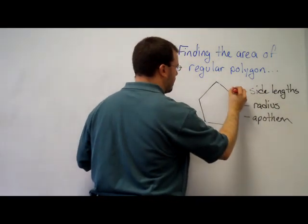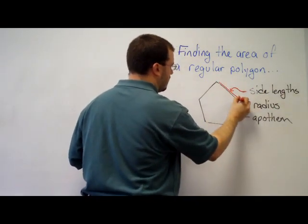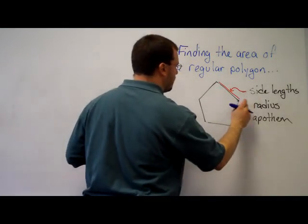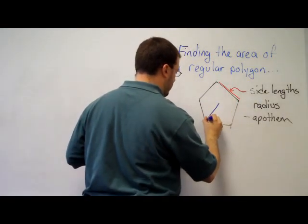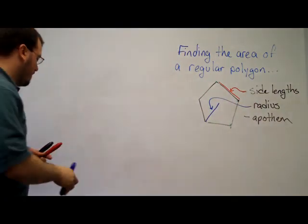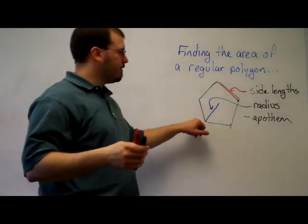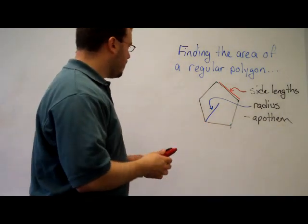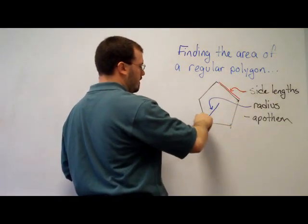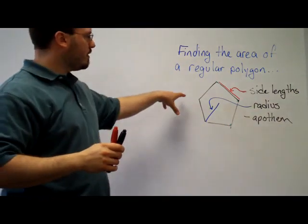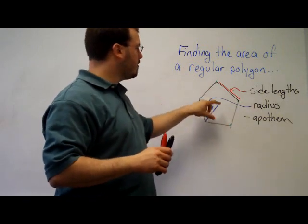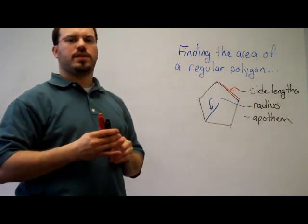Side lengths, that would be this. Radius goes from the center of the polygon to one of the vertices of the polygon. It's called radius because you can draw a circle about the polygon, and it will touch all the vertices. So a regular polygon can be inscribed inside of a circle, and this is the radius of the circle.